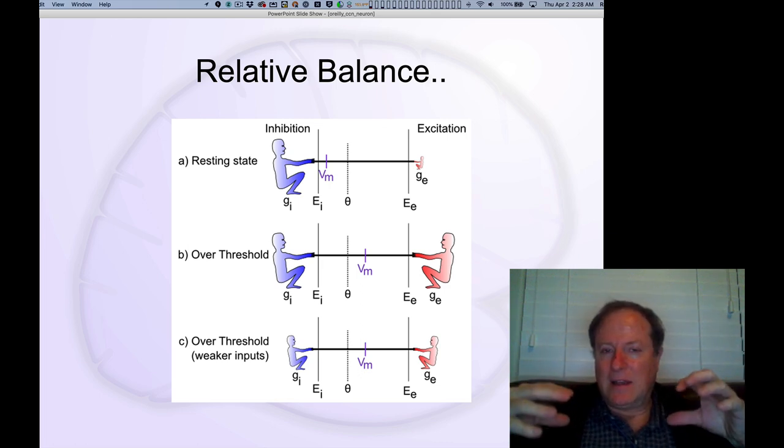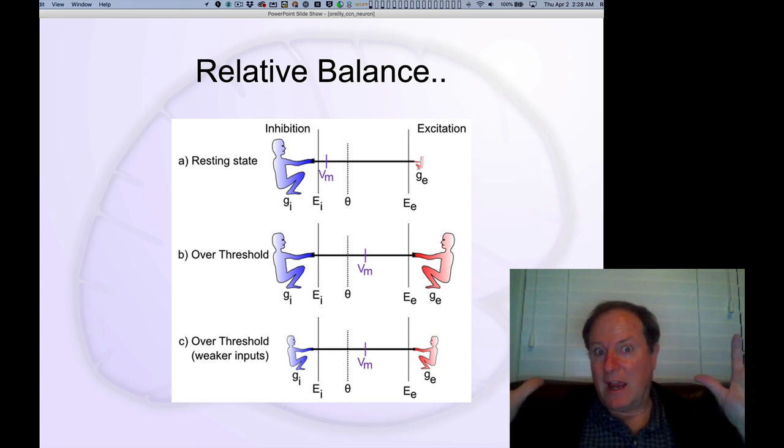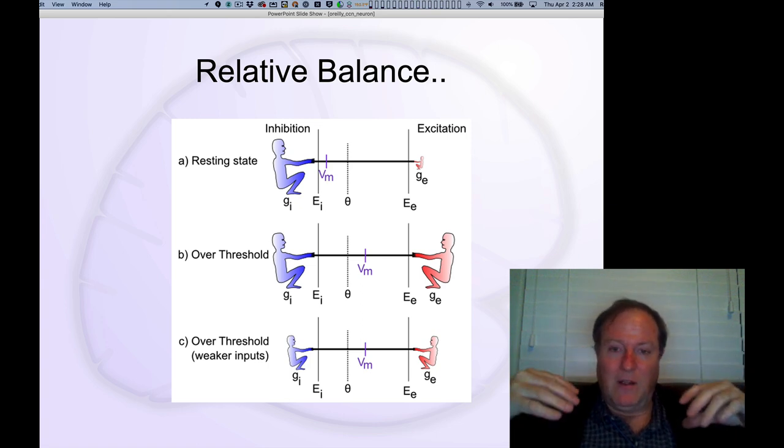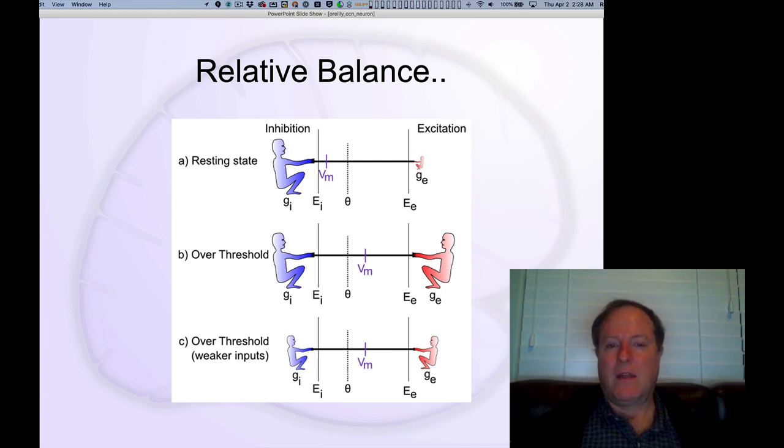As that excitation starts coming in from the digit 8, for example, if we see an 8 and we get a lot of excitation rushing in, that GE excitation builds up. That starts pulling that membrane potential up, up, up, up towards this threshold.